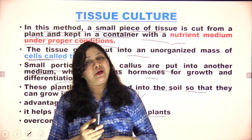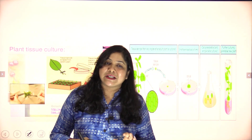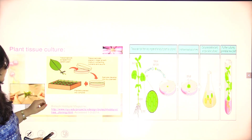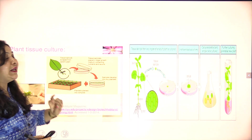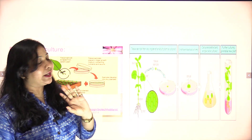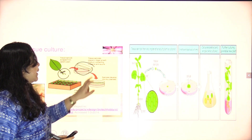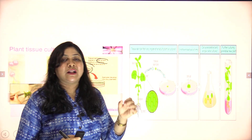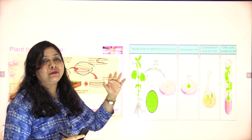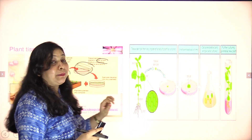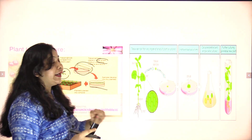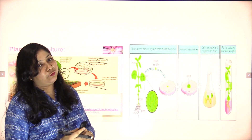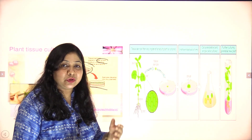In today's video we studied asexual reproduction. In the next video we will discuss sexual reproduction. You can see the tissue culture diagram here — first a group of cells is collected from the plant, kept in a growth medium with nutrients and hormones to strengthen growth and development. The plantlets you get are then put in soil and the plants develop. It is a simple but very important and useful method for farmers.